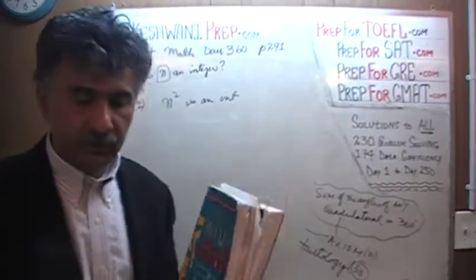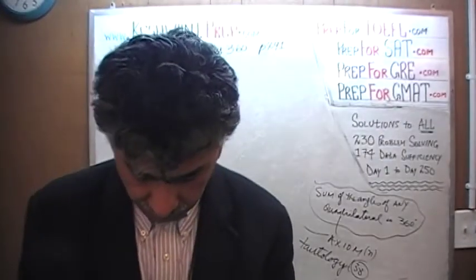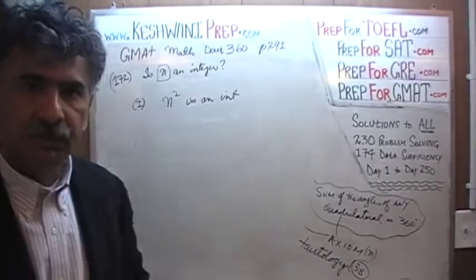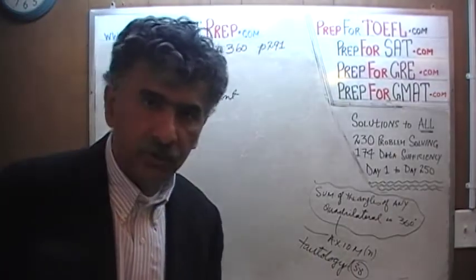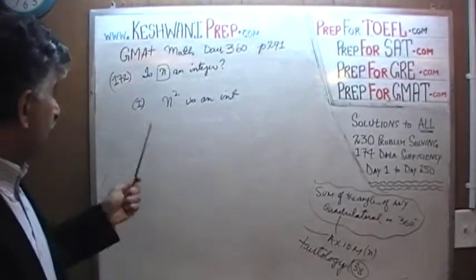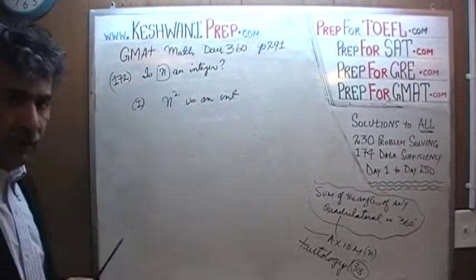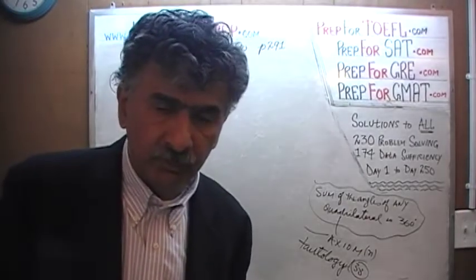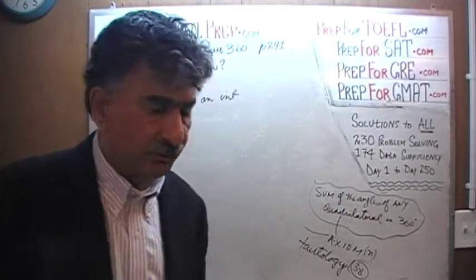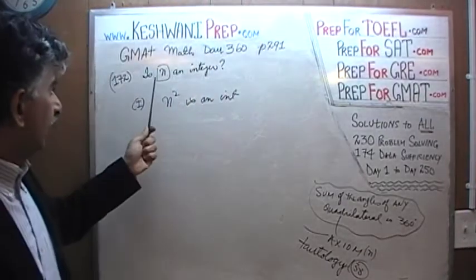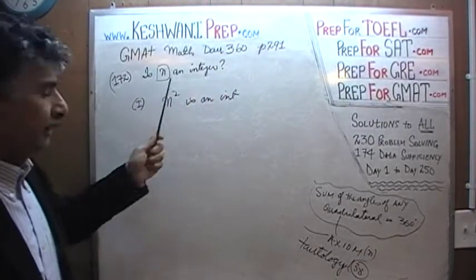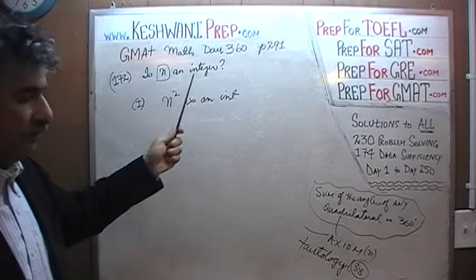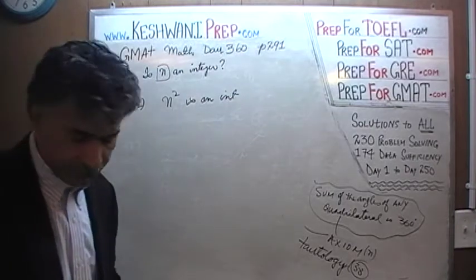We are on page number 291 — please turn to it. Problem number 172 is what we are looking at. Problem 172 is a pretty straightforward simple question. The question simply is: is N an integer? We have some quantity N, and the question is, is that guy an integer?